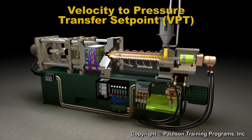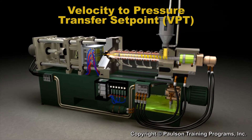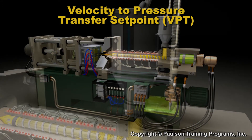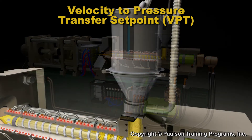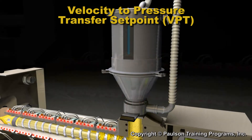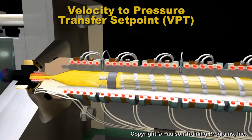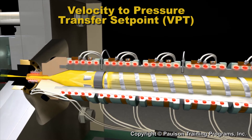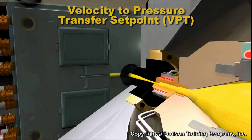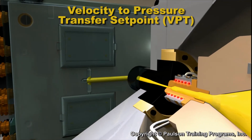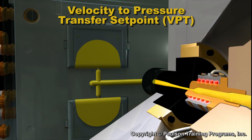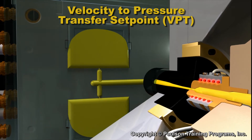Next, we'll cover the Velocity to Pressure Control, the VPT Setpoint. This is a very important control setting. The VPT Setpoint is the setting that switches control of the screw from fill rate to pack hold.